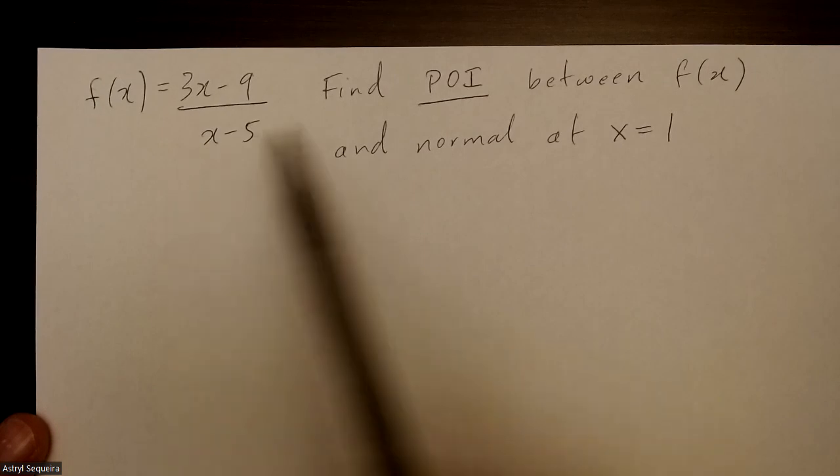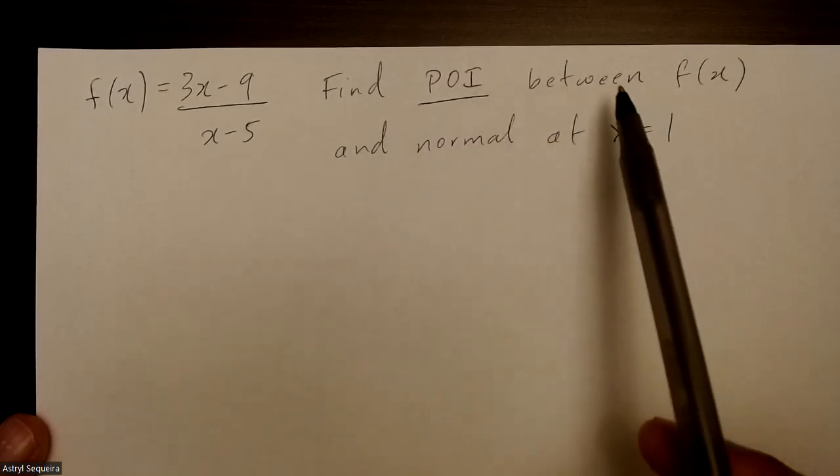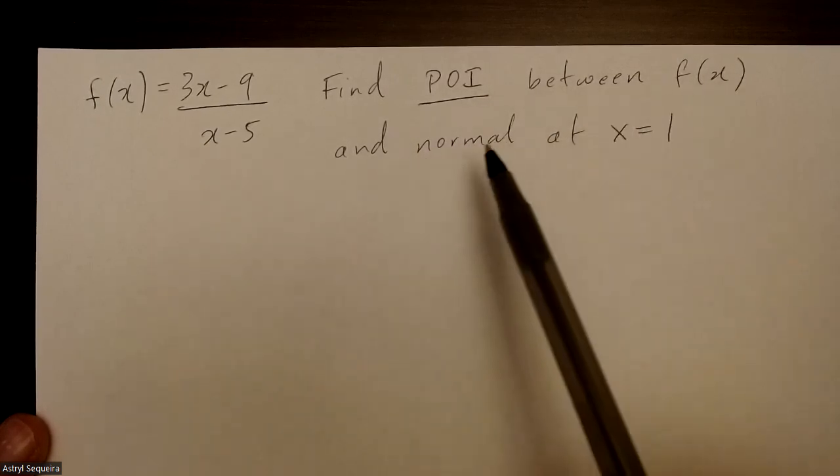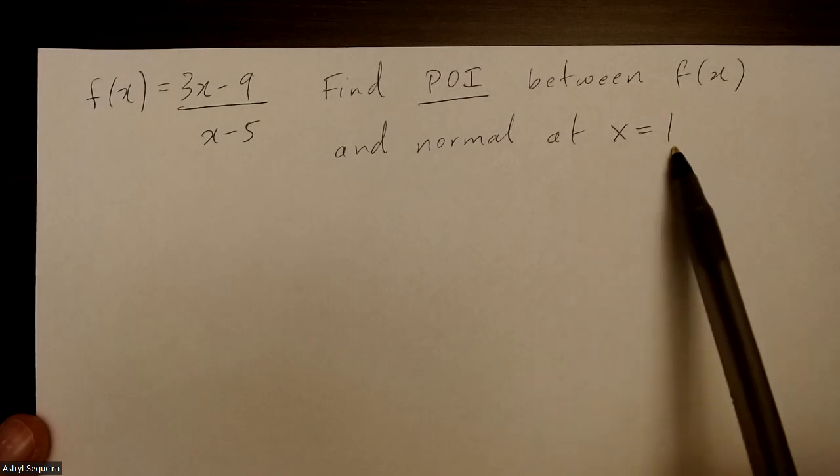Alright, so we have this rational function and we need to find the point of intersection between the function and the normal at x equals to one.